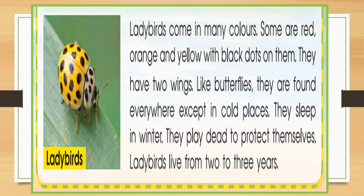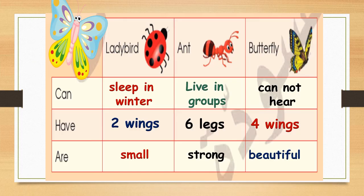This is the information about these three insects. Ladybirds can sleep in winter. Butterflies can't hear. Ladybirds have two wings. Ants have six legs. Butterflies have four wings. Ladybirds are small. Ants are strong and butterflies are beautiful.